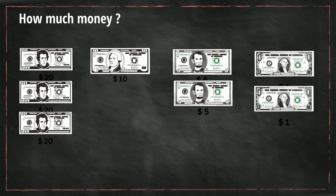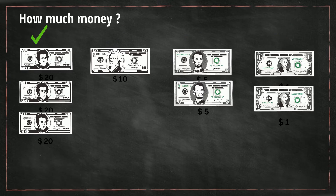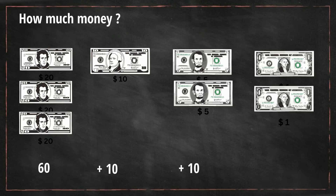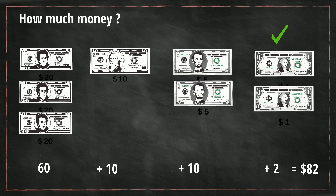Let's take a look at this one. We begin with three twenty dollar bills, one ten dollar bill, two five dollar bills, and then two ones. So let's total the twenties: 20, 40, 60. Then we have one ten and two fives, which is 10 plus 10, and then two one dollar bills. When we total this, that gives us $82.